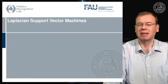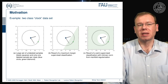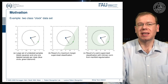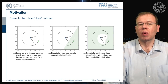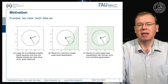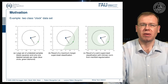Today's topic is the Laplacian support vector machine. The idea we want to follow is essentially the one you can see in this example. We have a dataset here — this clock dataset — where you only have two instances that are labeled: essentially the blue and the green point. Now you want to compute a decision boundary between the two. If you take the two observations and do supervised learning with a linear decision boundary, you get the decision boundary as shown in the center image, which may not be very useful.